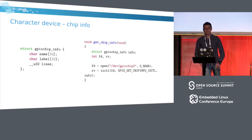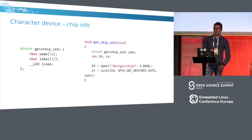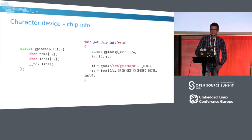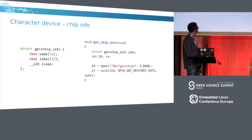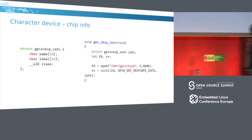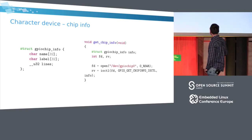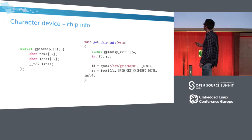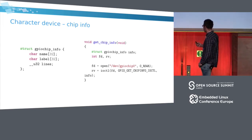The first thing you usually want to do is get information about a chip. You open the device — for example /dev/gpiochip0 — using the open system call, store the file descriptor, and run the GPIO_GET_CHIPINFO_IOCTL while passing the structure as argument. This fills the structure with the name, label, and number of lines. The open itself doesn't set direction or anything — it just opens the chip.